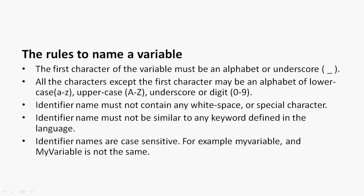Now coming to the rules to name a variable in Python. The first character of the variable must be an alphabet or underscore. All characters except the first may be a lowercase letter (a–z), uppercase (A–Z), underscore, or a digit. The identifier name must not contain any white space or special character, must not be similar to any keyword, and identifier names are case sensitive.